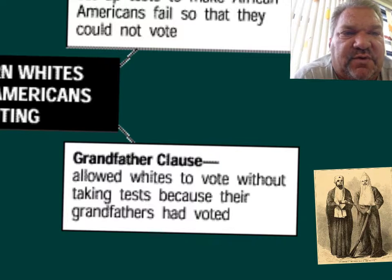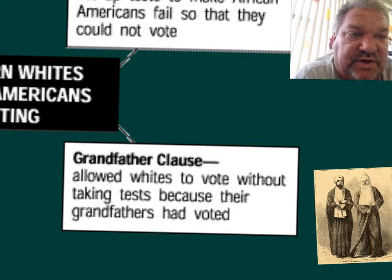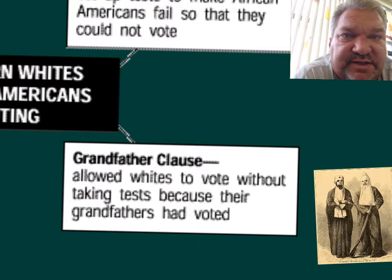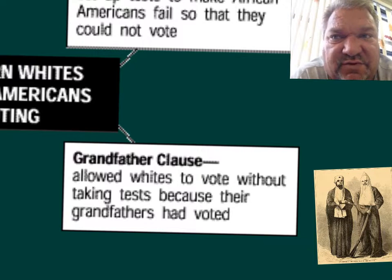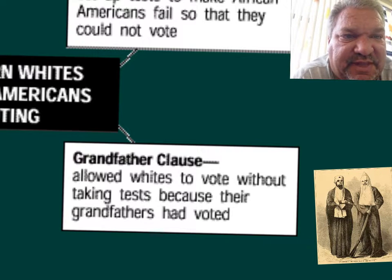The Grandfather Clause allowed whites to vote without taking the test because their grandfathers had been able to vote. In 1869 was when African Americans were given voting rights — that was the only time they were able to vote. So if their grandfather couldn't vote before that, how could they have ever been able to vote? They couldn't. That's the way they kept them from voting.